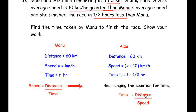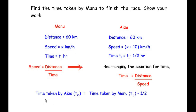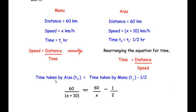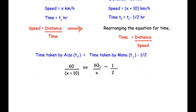Using the relationship time equals distance over speed, we write the time taken by Aiza (t2) equal to the time taken by Manu (t1) minus one-half. Substituting distance and speed: time taken by Aiza is 60 over (x plus 10), which equals time taken by Manu, 60 over x, minus 1 over 2. Now we are going to simplify the right-hand side by cross multiplication.